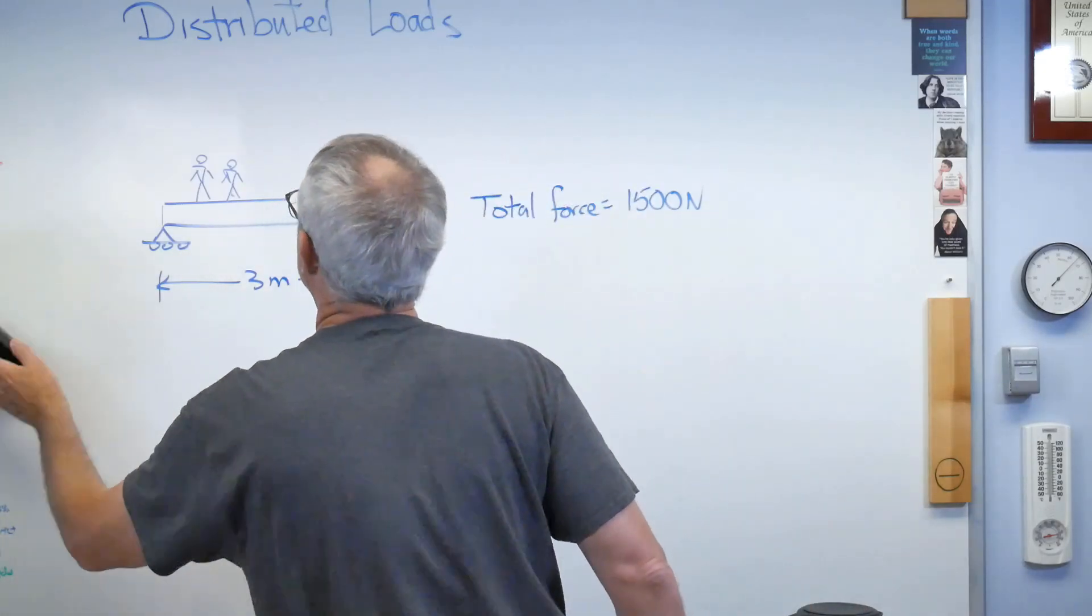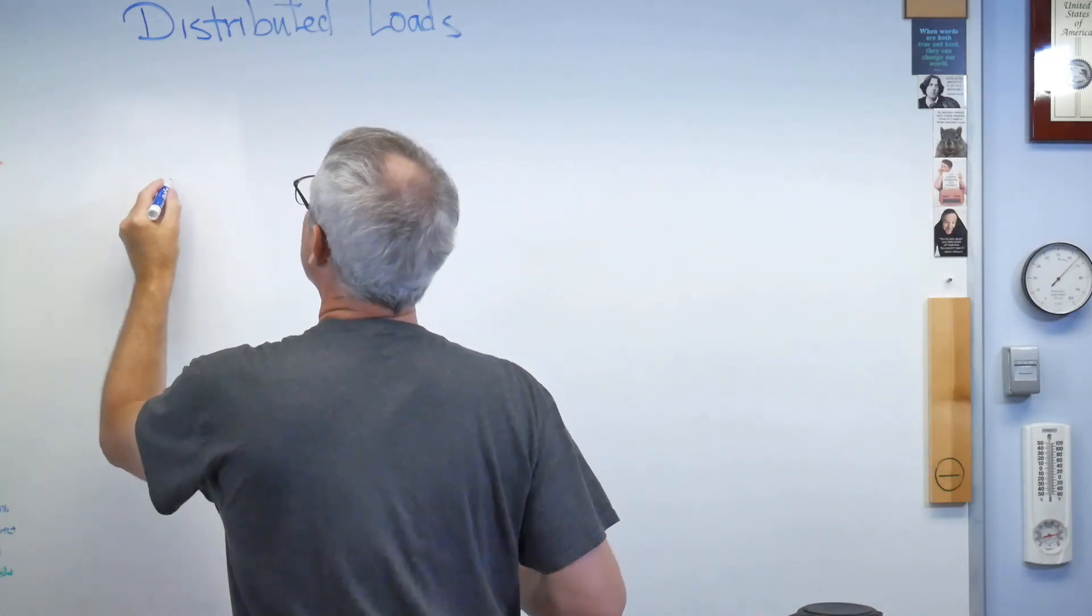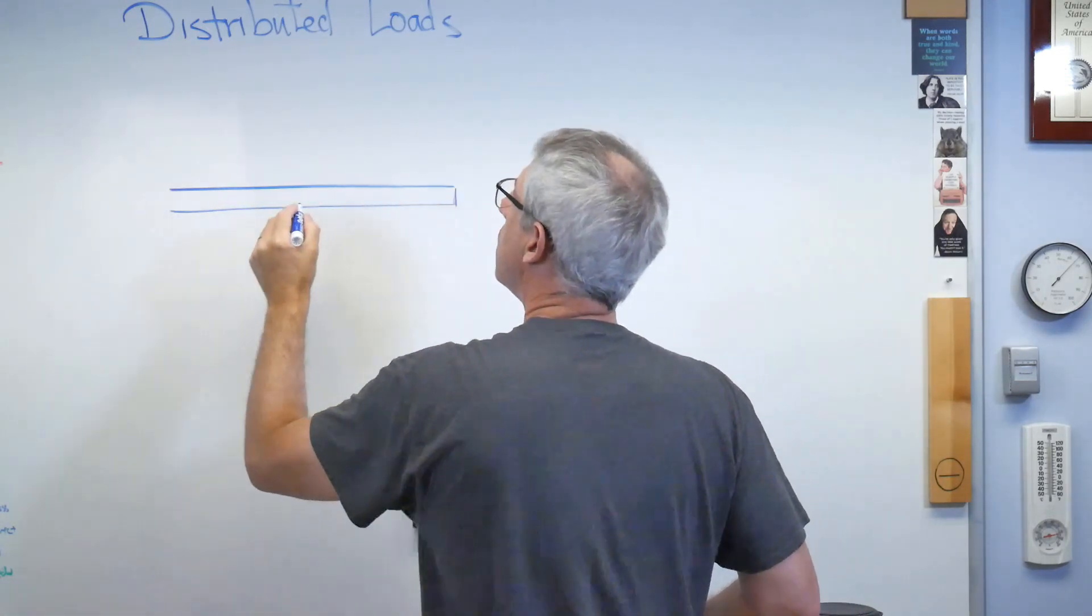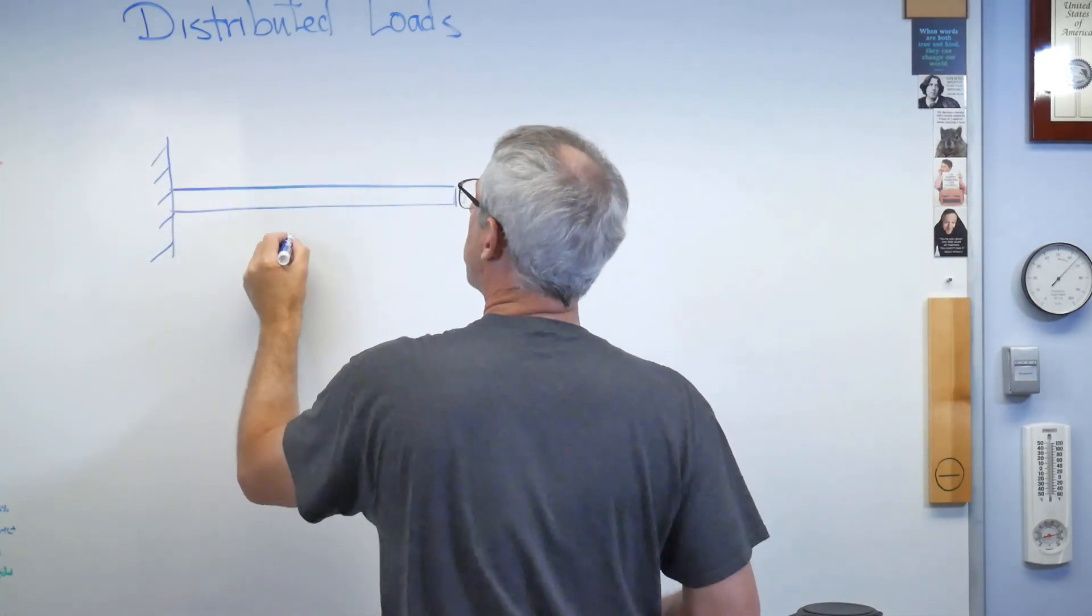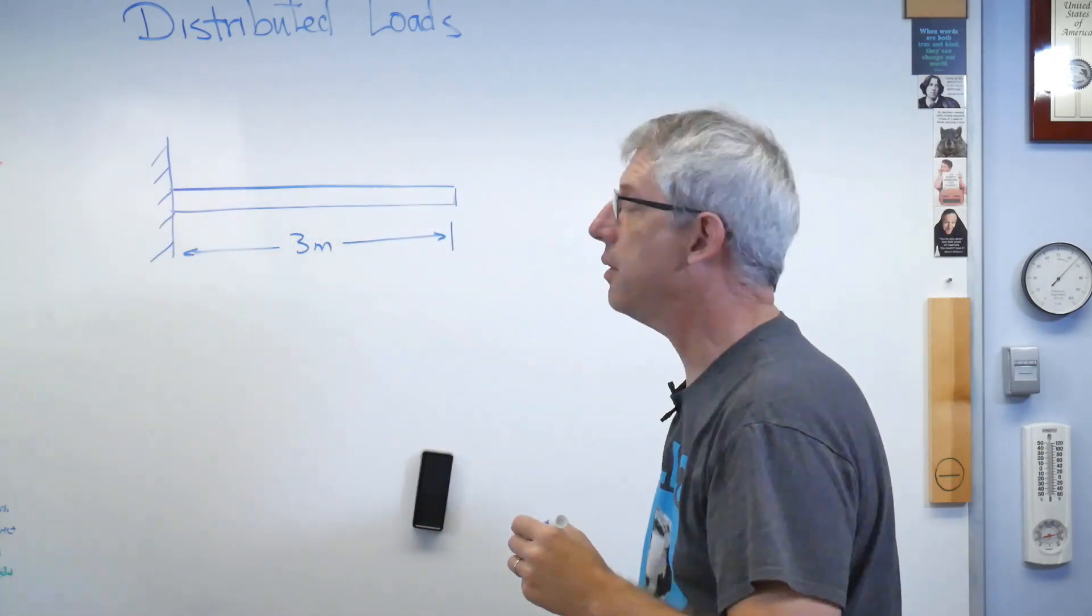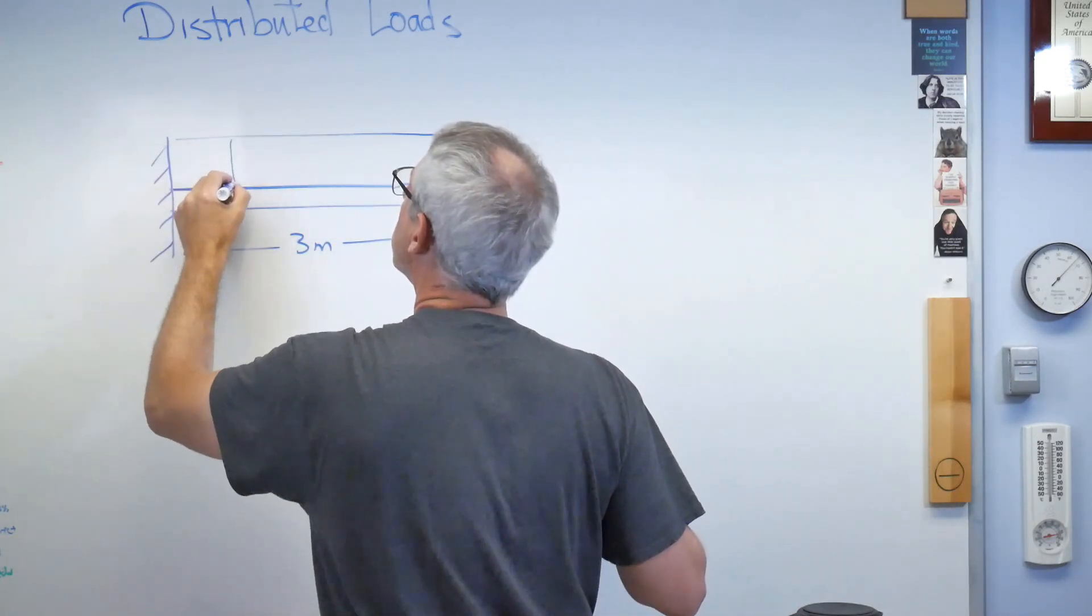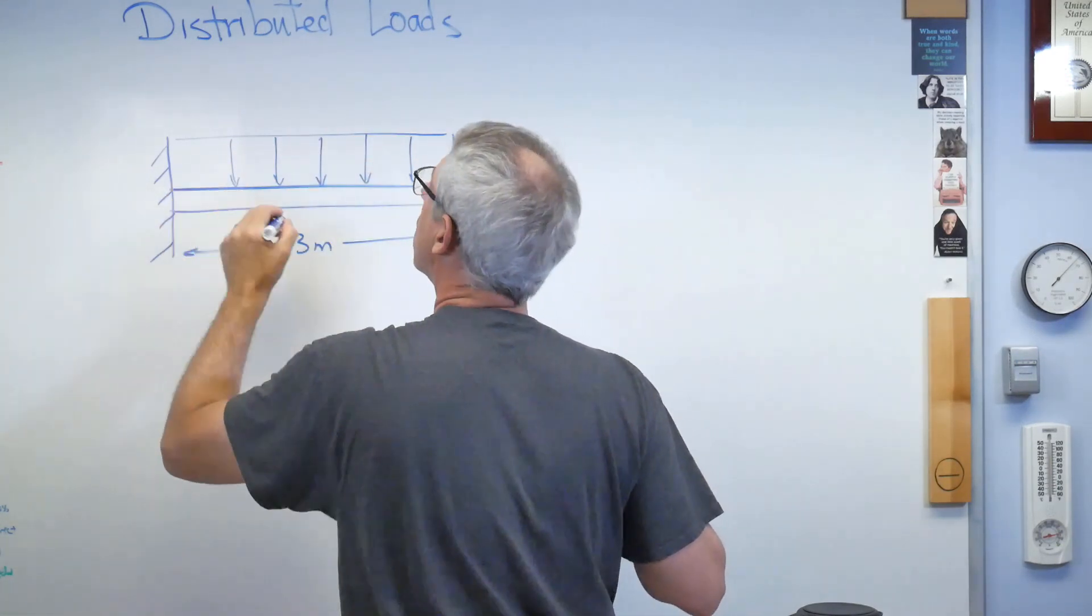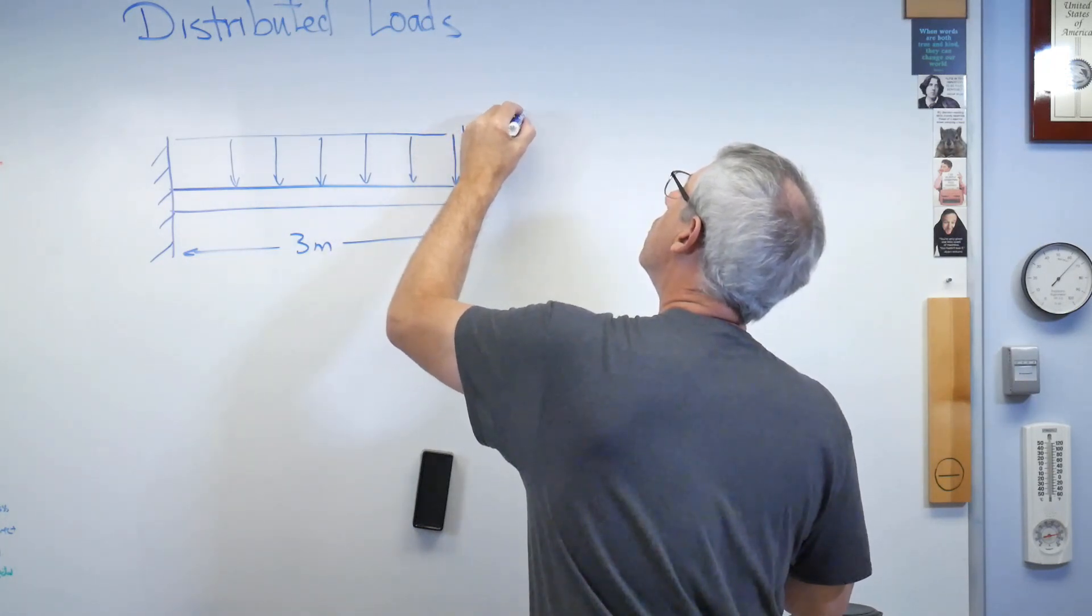So how do we handle this mathematically? You know, it's pretty straightforward. Let's take the simplest case of a cantilever beam, and this could be maybe a balcony. And let's say it's 3 meters. And let's say this distributed load is down. It could be down, it could be up, it doesn't matter. And let's say it's 1,000 newtons per meter.